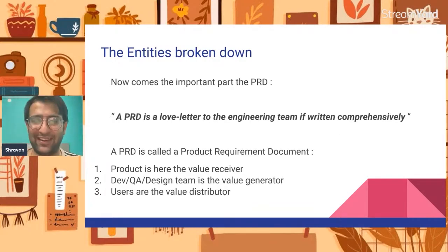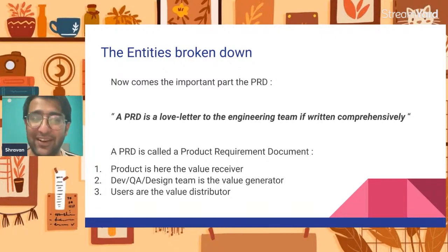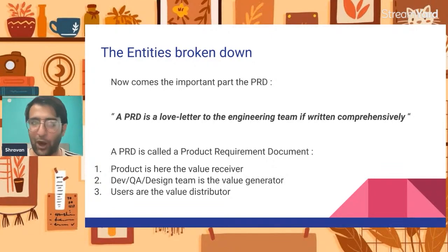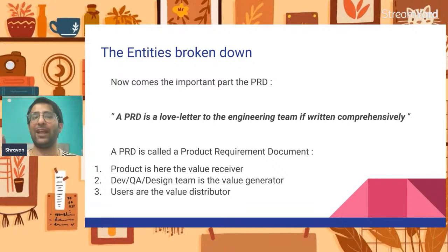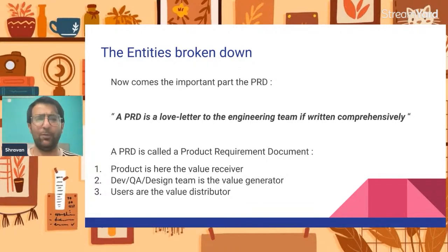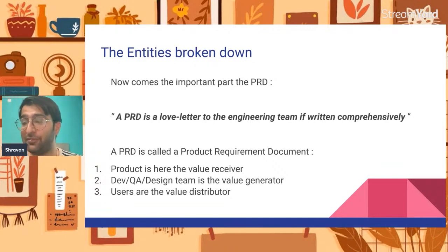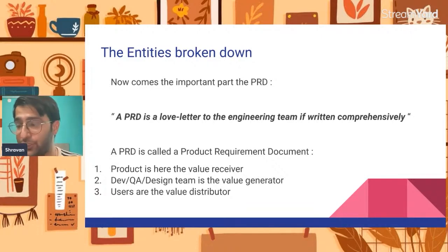A PRD is like a love letter to your engineering team. If written comprehensively, a PRD is a document such that if the product manager does not even exist, the business automatically understands what has to be done. The product is the value receiver — you give a requirement, it gets implemented. Dev, QA, and design are the value generators, and users are the value distributors.